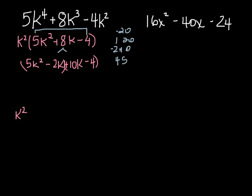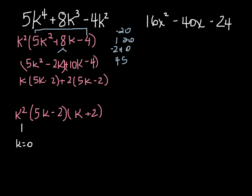Group I'm going to get k times 5k minus 2 plus 2 times 5k minus 2. So 5k minus 2 is the common term and k plus 2. Okay so this is kind of interesting if you look at this you have k equals 0 but this is going to be a double root. This will give me k equals 2 fifths and this will give me k equals negative 2.